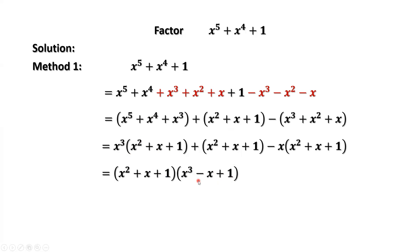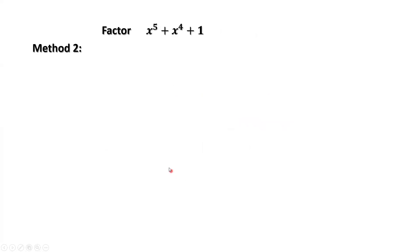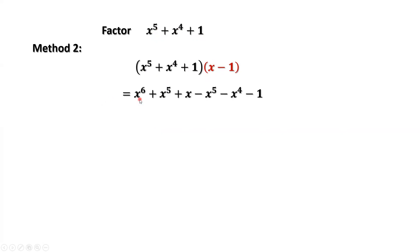This is Method 2, a special method. In order to factor x to the power of 5 plus x to the power of 4 plus 1, we multiply this polynomial by x minus 1 and expand this product. Then we have x to the power of 6 plus x to the power of 5 plus x minus x to the power of 5 minus x to the power of 4 minus 1. We cancel out, and then we have x to the power of 6 minus x to the power of 4 plus x minus 1.